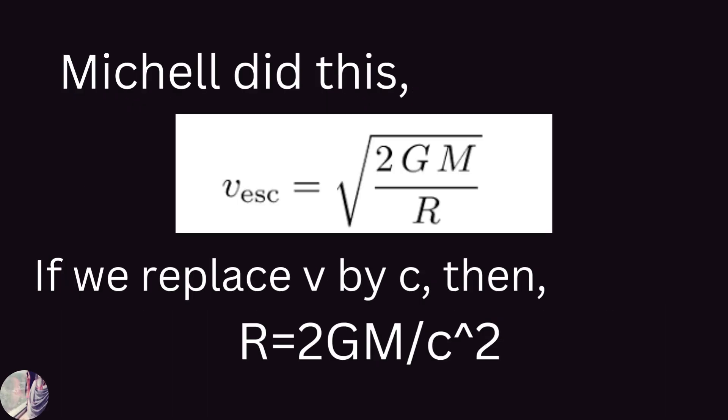Michell derived the formula for finding escape velocity as v_escape = √(2GM/r), and if we replace v by c and simplify for r, then we get r = 2GM/c², where c represents the speed of light.